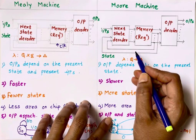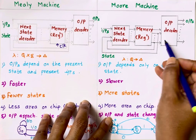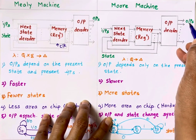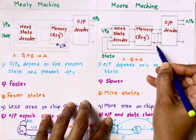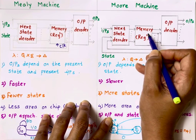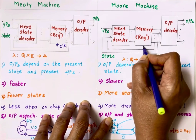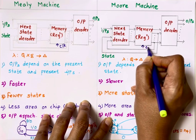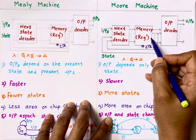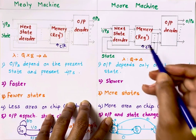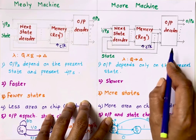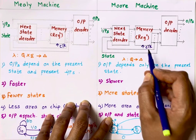Whereas in the case of a Moore machine, output depends on present state only. The present state is the output of memory elements, that is flip-flops, and the present state depends on the clock input.